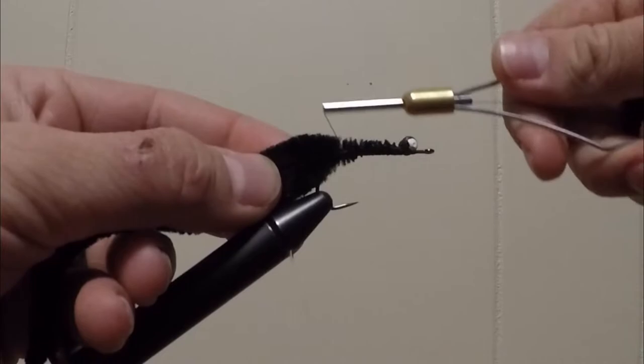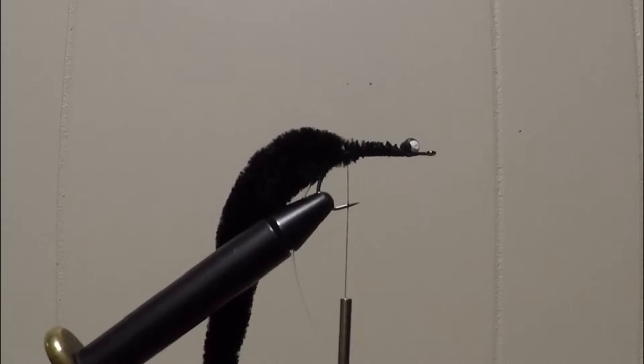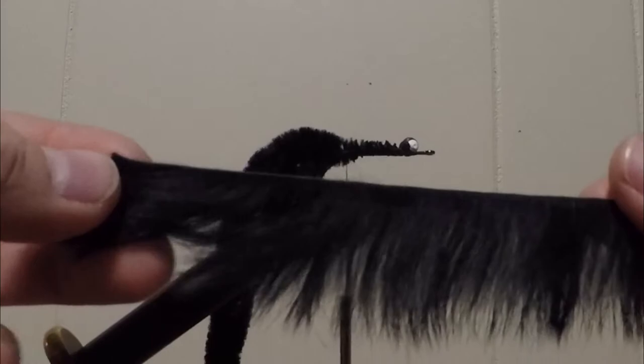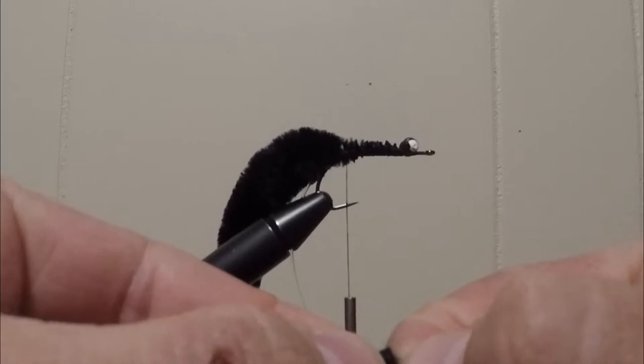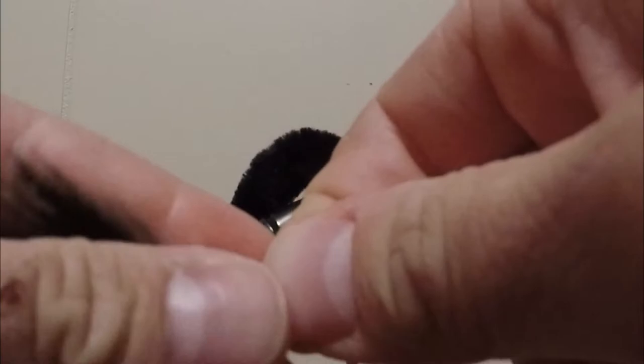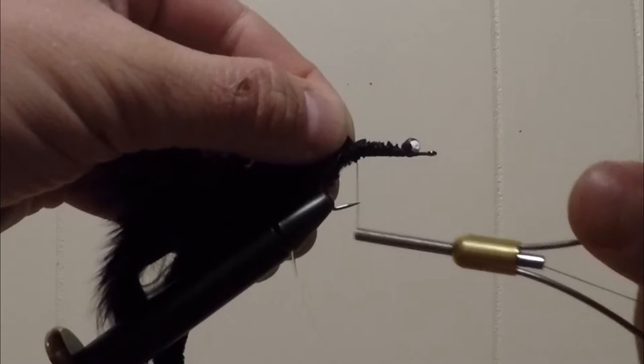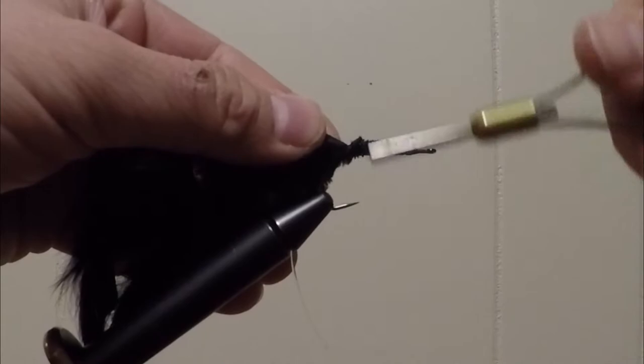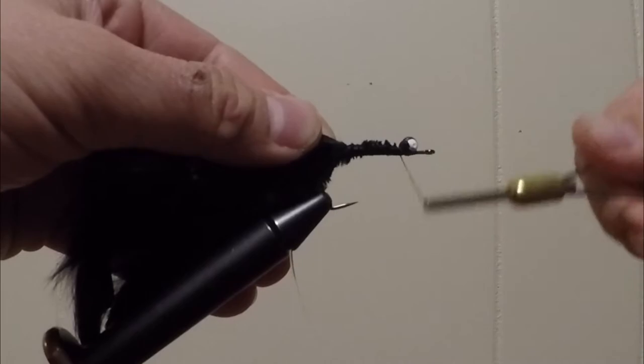It is kind of messy but it will get cleaned up here in just a second. Next what you want to do, you take your cross cut rabbit strip just like so. And you strip off just a few fibers, just a few from the top of this strip. And then clip it just so. Clip it just so that you got a little point. And then tie it in just in front of that dragon tail. Move your thread up behind the eyes there. Then take it and make touching wraps all the way forward.